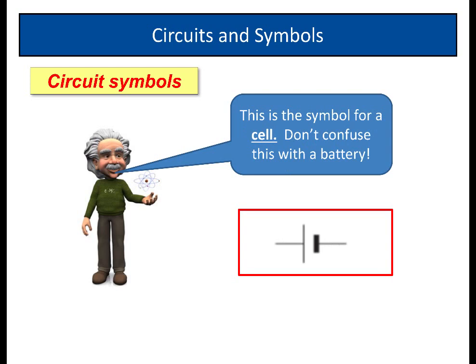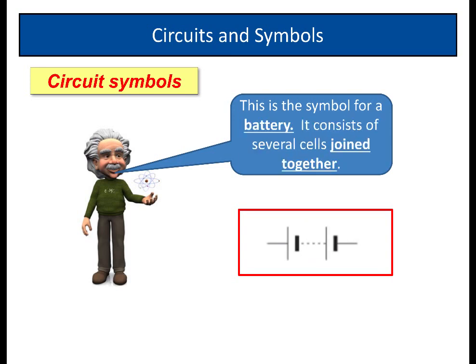Here we have a symbol for a cell. So we've got one longer line. That's this one here, which is a positive electrode. And the shorter one, negative electrode. Now, it's important to realize this is a cell. Don't confuse this with a battery. When we're talking about a battery, we're talking about several cells joined together. So here we've got two cells joined together to make a battery. So this is the symbol here for a battery.